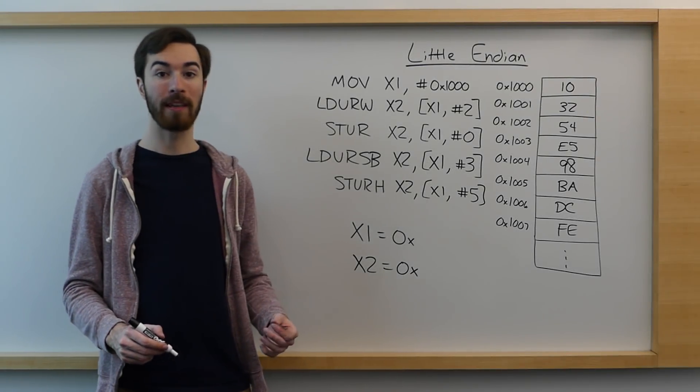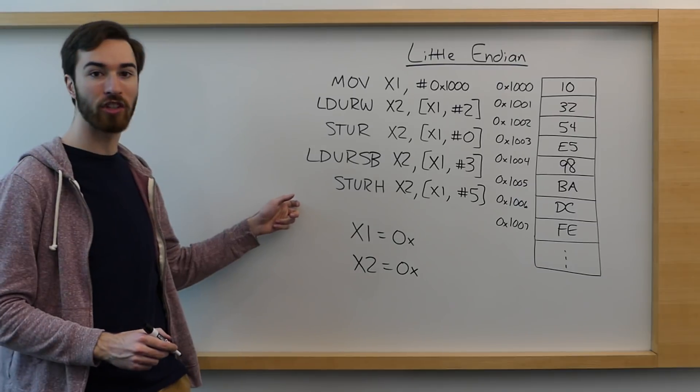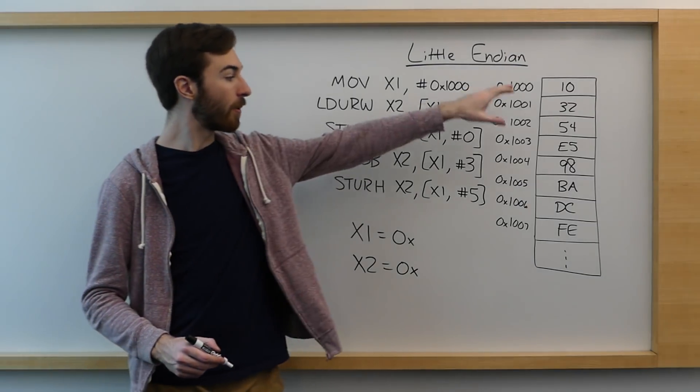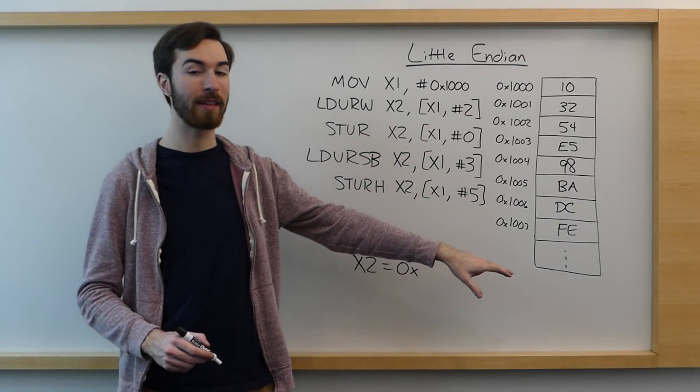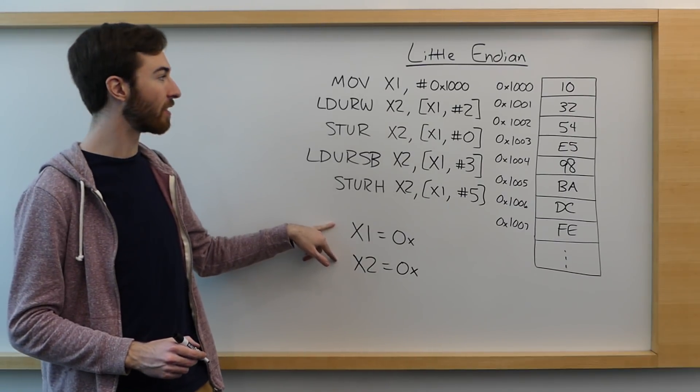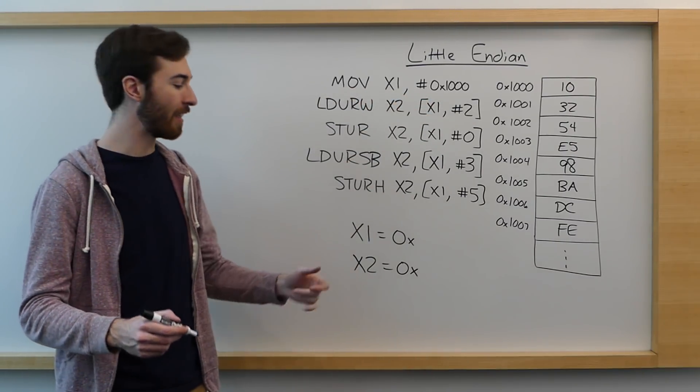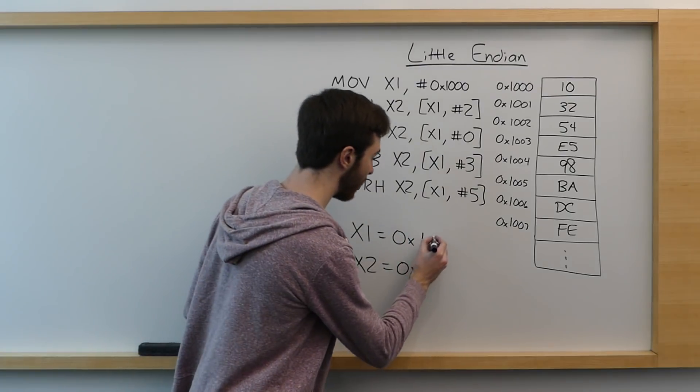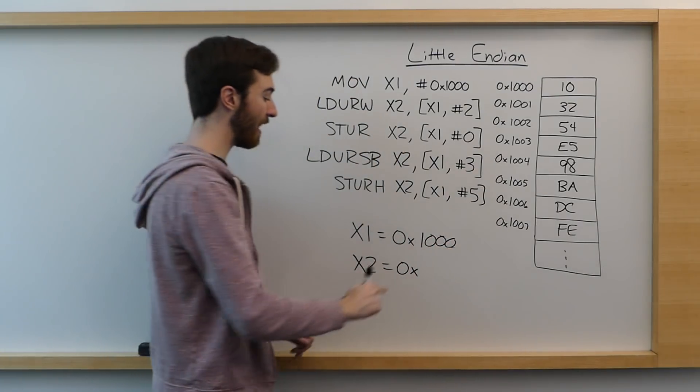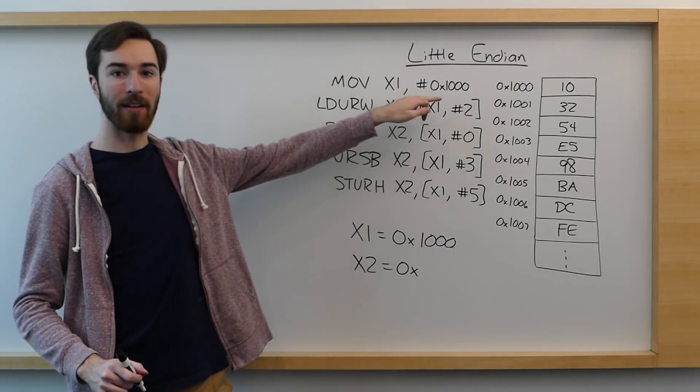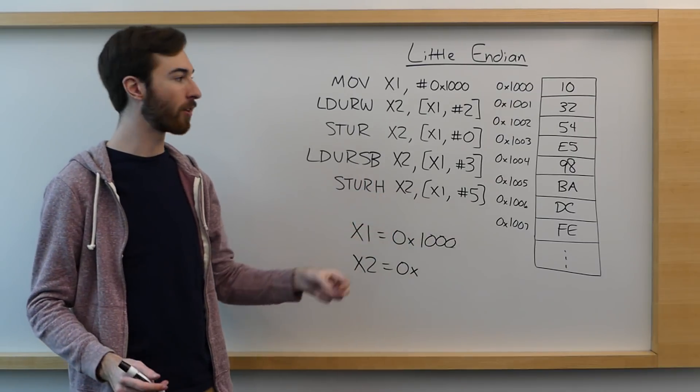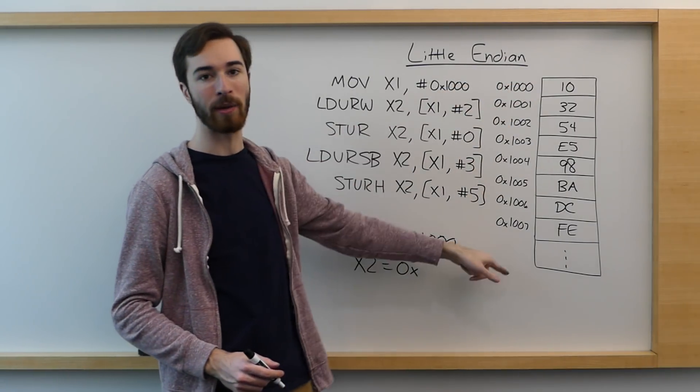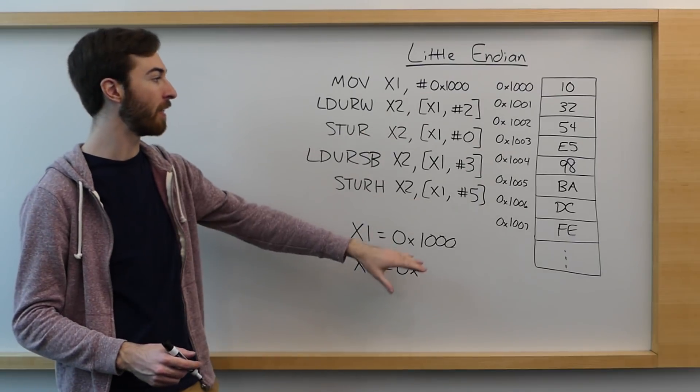So now let's walk through this quick example where we have these five instructions that we're going to run. This is what the memory layout looks like initially and we'll be filling in these two registers. To start off with, we just assign the value 0x1000 into X1,